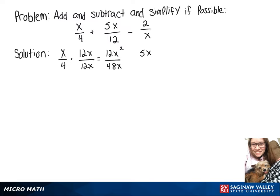Then we'll take the 5x over 12 and multiply that by 4x over 4x, giving us 20x squared over 48x.